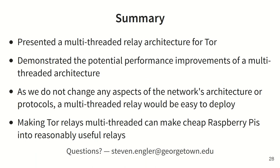Today we presented a multi-threaded relay architecture for Tor and demonstrated the potential relay performance improvements of this architecture. As we only make internal relay changes and not network architecture changes, an implementation of our multi-threaded design would be easy to deploy. The Tor project is currently in the process of developing a Tor client in the Rust programming language, and this codebase may also be used for relays in the future — making this migration a good time to consider this multi-threaded design. Our results showed that the multi-threaded design works well on both typical server hardware and small single-board computers, and even inexpensive hardware like the Raspberry Pi has the potential to be useful on the network.